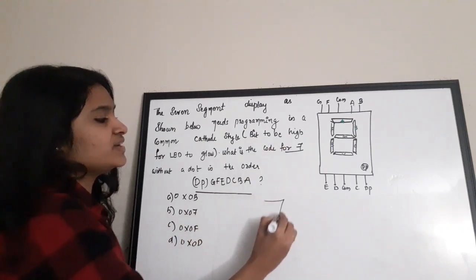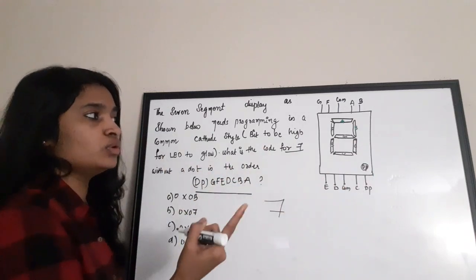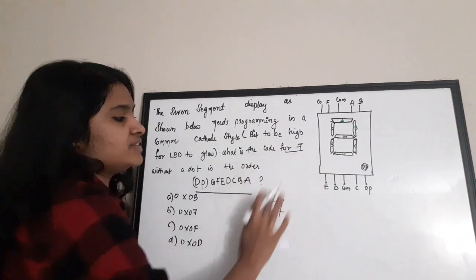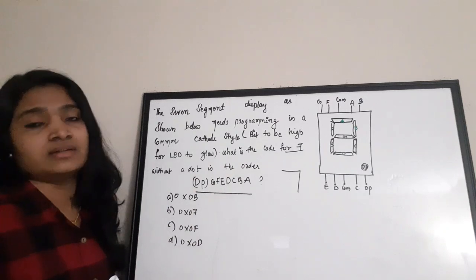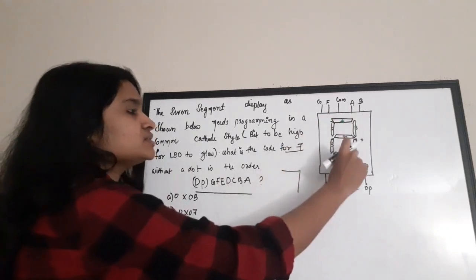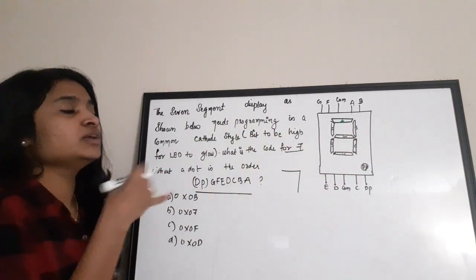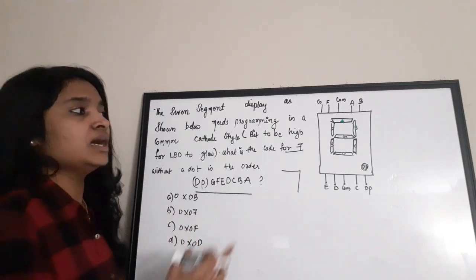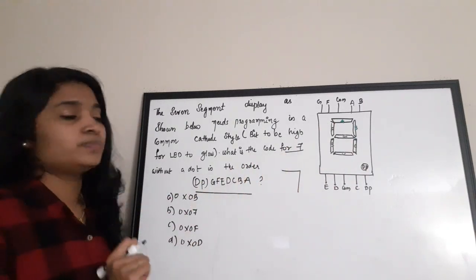To display '7', you don't need the dot to glow. A '7' on a 7-segment display won't look like a handwritten 7 — it will look like only segments a, b, and c glowing. So we need a to be on, b to be on, and c to be on. We don't want dp, and all other segments remain off.